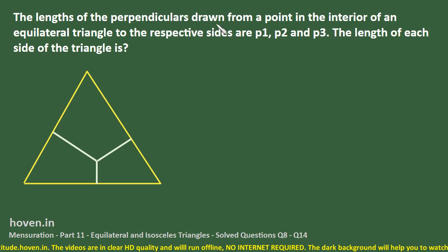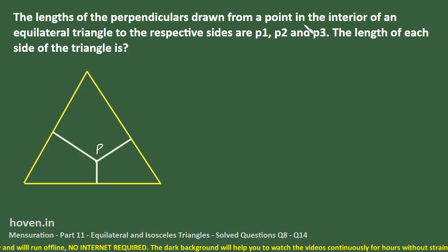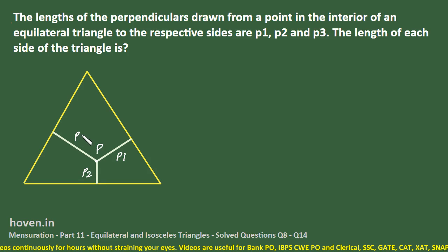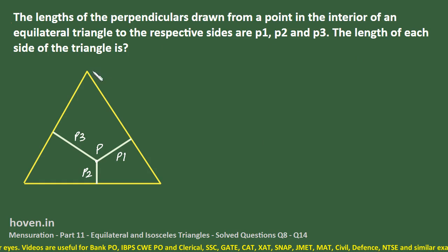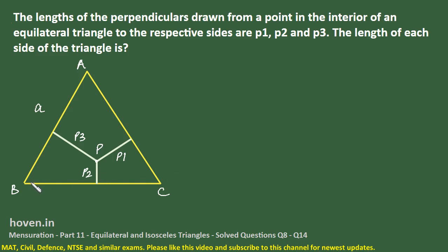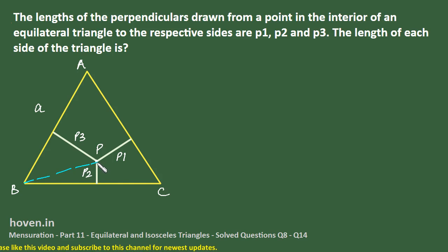Next question: the lengths of the perpendiculars drawn from a point P in the interior of an equilateral triangle to the respective sides are p1, p2, and p3. We have to find the length of each side of the triangle. Let us mark the three corners as A, B, and C, and join the vertices to the common point P.